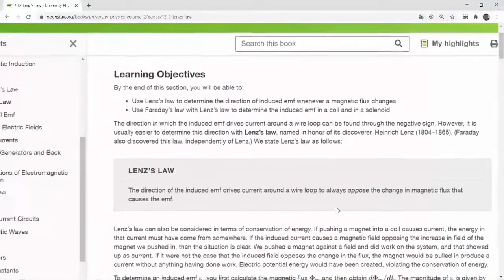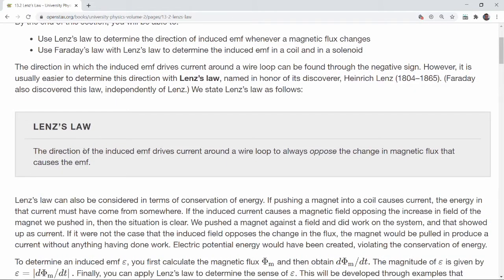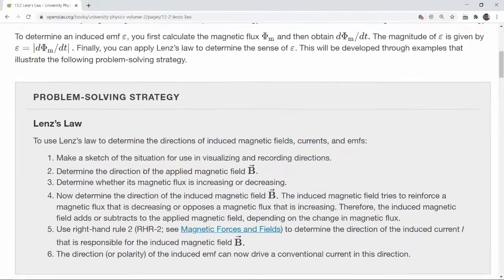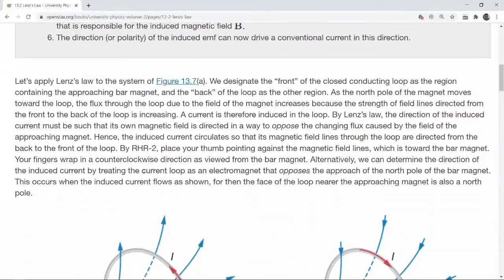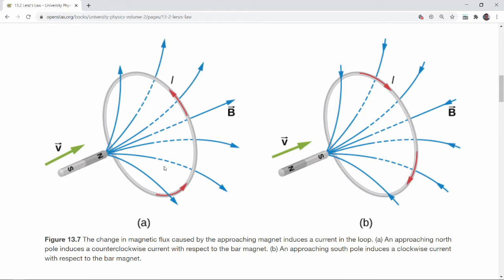And it's always a bit of a mouthful to say Lenz's law. Here, the textbook version says the direction of the induced voltage drives current around the wire loop to always oppose the change in magnetic flux that causes the induced voltage. I highly recommend that you get plenty of practice. There are homework questions and other resources to help you practice application of Lenz's law. One upside of Lenz's law is that it is a qualitative description. So I think it's more intuitive to apply than just seeing that negative sign on Faraday's law.